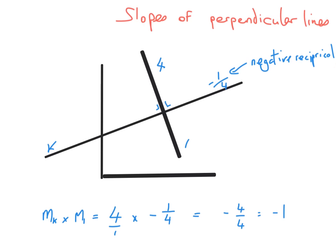One type of question you may be asked is to prove that two lines are perpendicular. You find the slope of each line. Then you say: the slope of K is MK and the slope of L is ML. MK times ML equals 4 over 1 times minus 1 over 4, which equals minus 4 over 4, which equals minus 1. Since it equals minus 1, therefore K is perpendicular to L. The three dots symbol stands for 'therefore.'